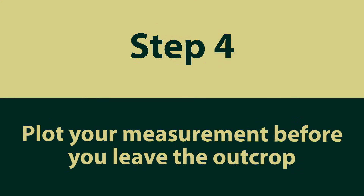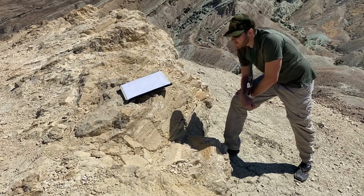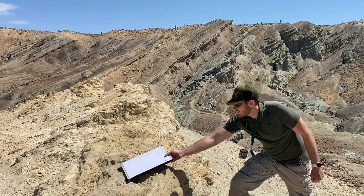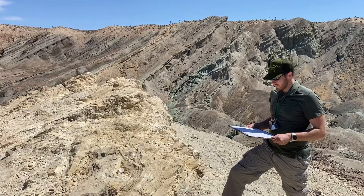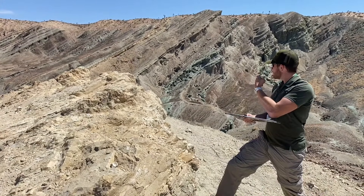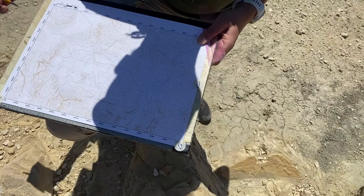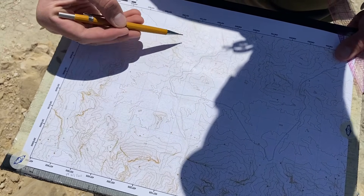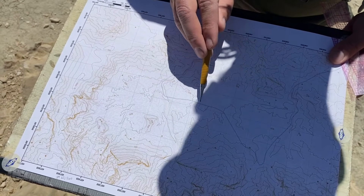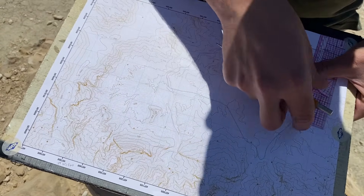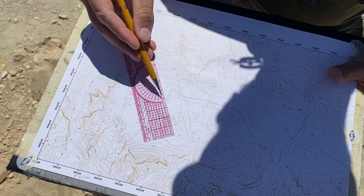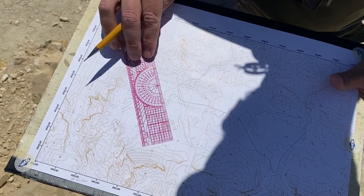Step four: plot your measurement before you leave the outcrop. Once you've finished making your measurements, use your geographic references to reorient yourself and make sure your measurement still makes sense. Before plotting your data, make sure that the lines of longitude and latitude on your map are parallel to the cardinal directions — you'll use these lines as references for the degree graduations on your protractor. If your map does not have these lines plotted, use the coordinate system graduations around the border of your map to plot some light pencil lines to use.